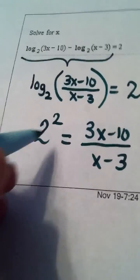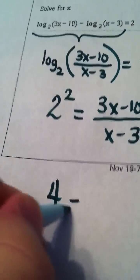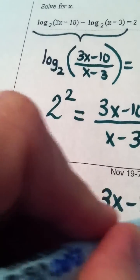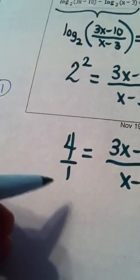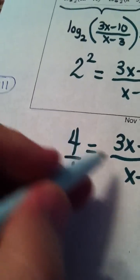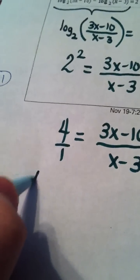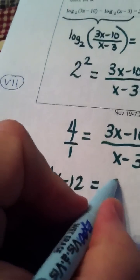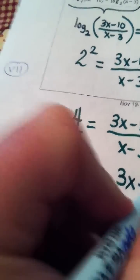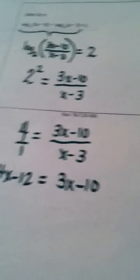So 4 equals 3x minus 10 over x minus 3. 4 is 4 over 1, so I'm going to cross multiply. 4 times the quantity x minus 3 is 4x minus 12 equals 3x minus 10.